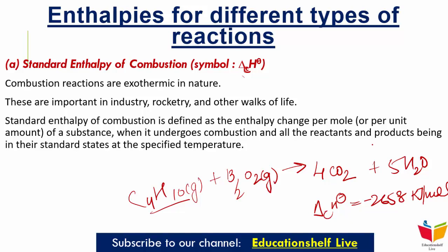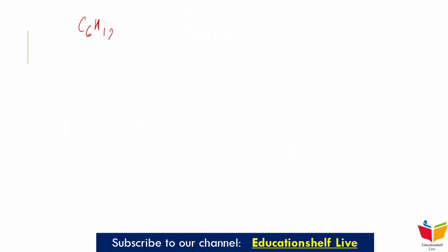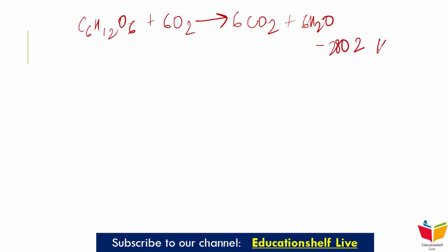Combustion of glucose gives out 2802 kJ per mol of heat. The equation is: C6H12O6 + 6O2 → 6CO2 + 6H2O, and the combustion enthalpy is minus 2802 kJ per mol. Our body also generates heat and energy from the food we eat through a similar combustion process, though it involves many complex biochemical reactions with enzymes in a series.